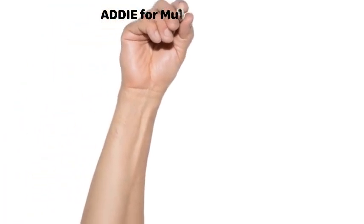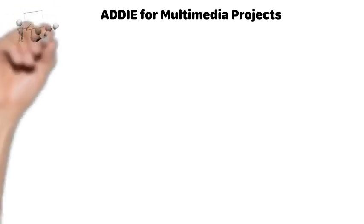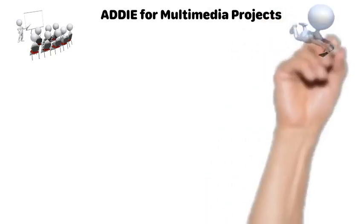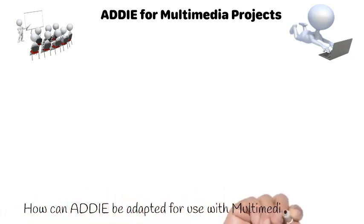When developing self-paced standalone content, such as for a multimedia project, some of the steps in the ADDIE process can be confusing. The ADDIE model was originally conceptualized to align with the way we create face-to-face training, and specifically training that may be developed by an instructional designer and taught by others. When there's no instructor involved and the line between development and implementation is not clear, the question is: how can ADDIE be adapted for use with multimedia projects?